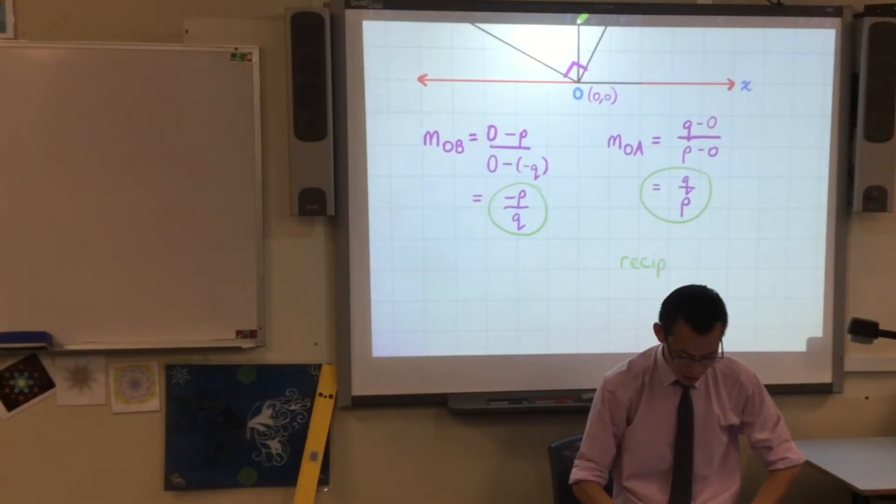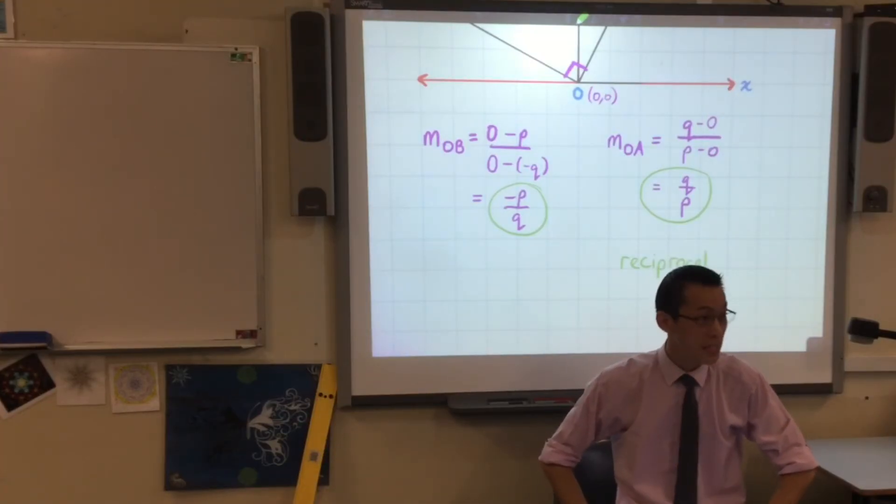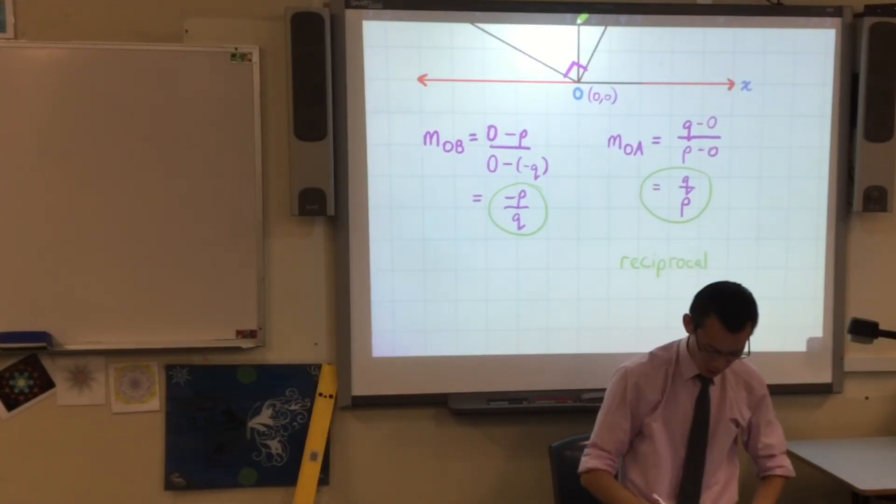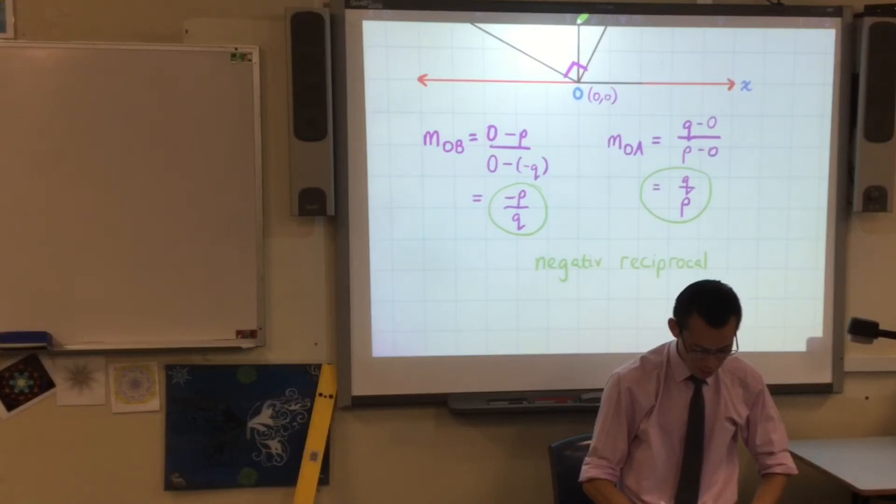But they're not just reciprocals of each other, are they? There's another difference. What's the other difference? Not just that you turned upside down. Negative. There's a negative sign. Thank you. So these are negative reciprocals of each other.